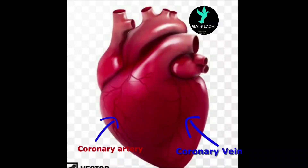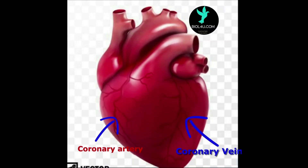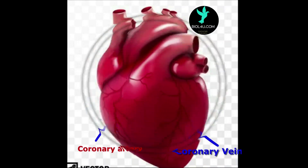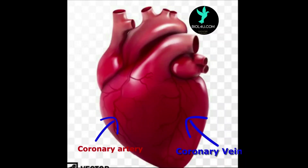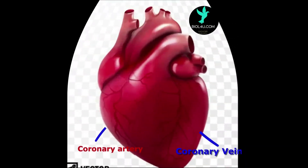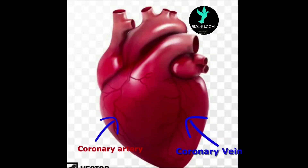In the human heart, two coronary arteries arise from the aorta just beyond the semilunar valves. During diastole, the increased aortic pressure above the valves forces blood into the coronary arteries and then sends it to the musculature of the heart. The oxygenated blood is returned to the chambers of the heart via coronary veins.